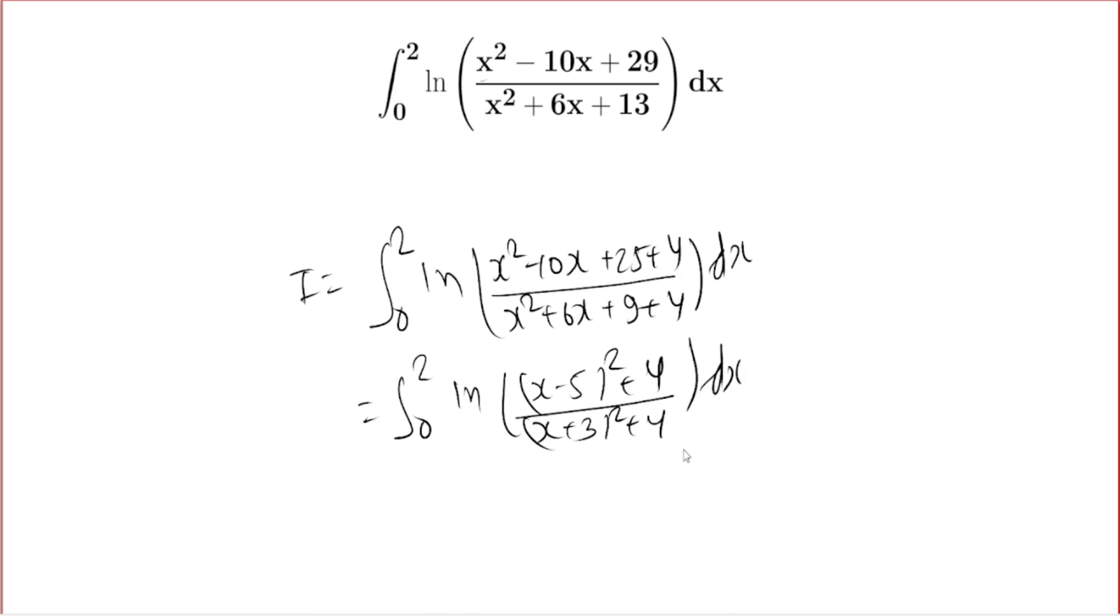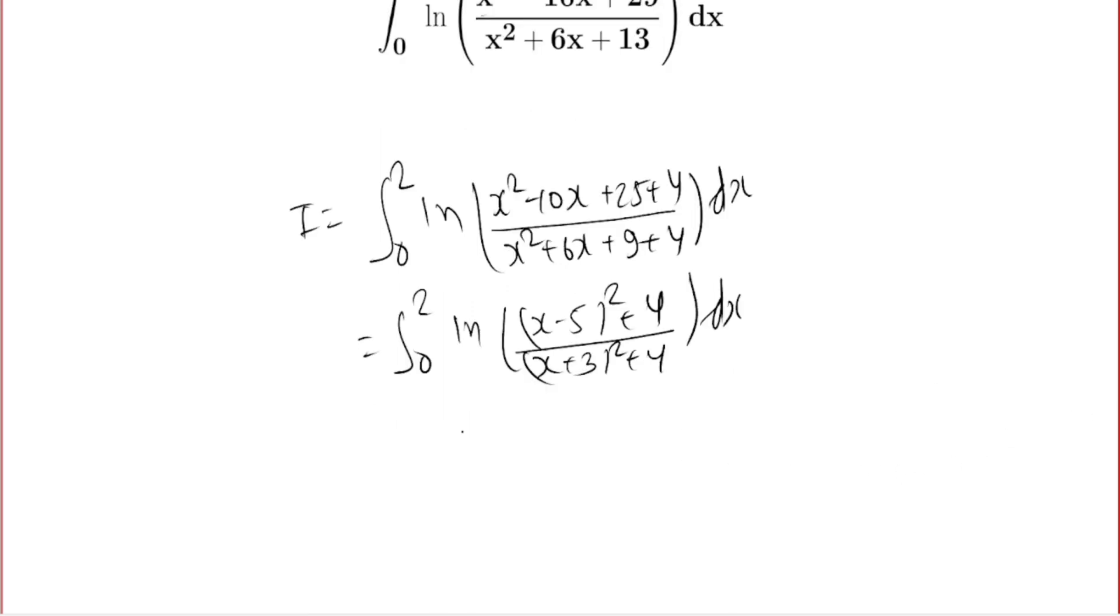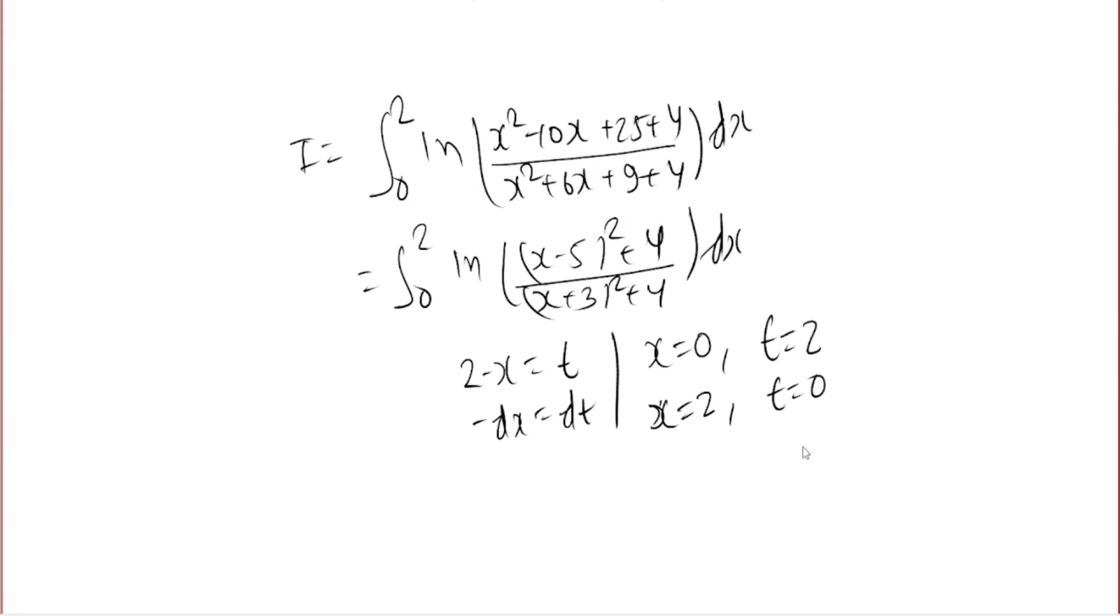Now you can use King's rule or simply substitute 2 - x = t, so -dx = dt. For x = 0, we get t = 2, and for x = 2, we get t = 0.